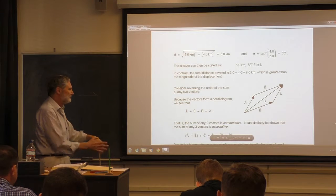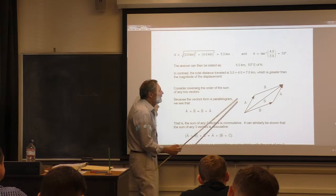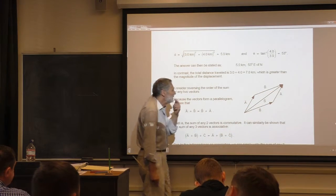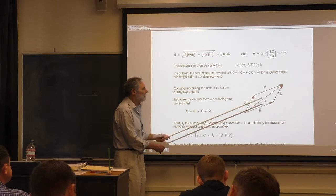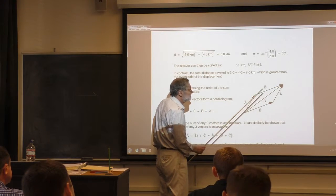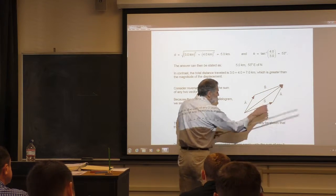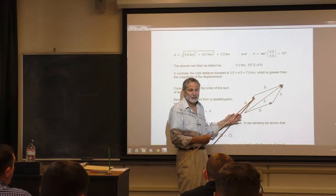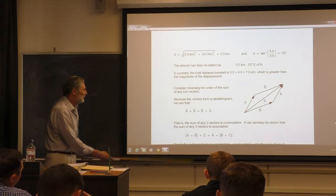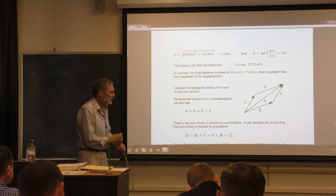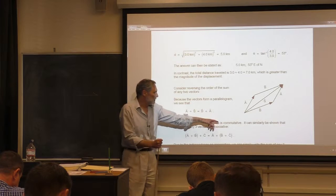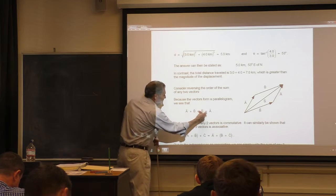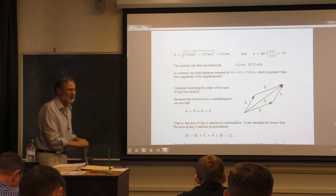There are some other simple properties we need to cover. If I add A to B, I get a resultant. If instead I start with B and then add A, by symmetry I get the same result. This is called the commutative property — it doesn't matter the order in which we add.